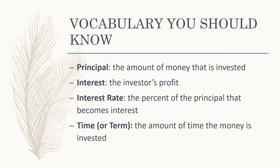The interest is how much the investor profits from the investment. Don't confuse this with interest rate — the interest is the profit amount for the investor, so it is an amount of money. Interest rate, on the other hand, is a percent — sometimes called APR, or annual percentage rate. This is the percent of the principal that becomes interest, and it determines how much the investor profits.